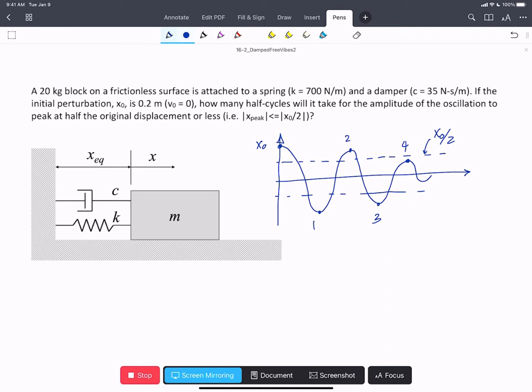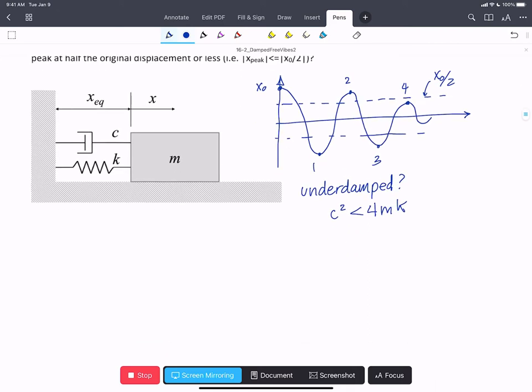So our first question is to check that the system is actually underdamped. The condition for underdamping is that c squared is less than 4MK. So we can put in 35 newtons seconds per meter all squared, it has to be less than 4 times 20 kilograms times 700 newtons per meter.